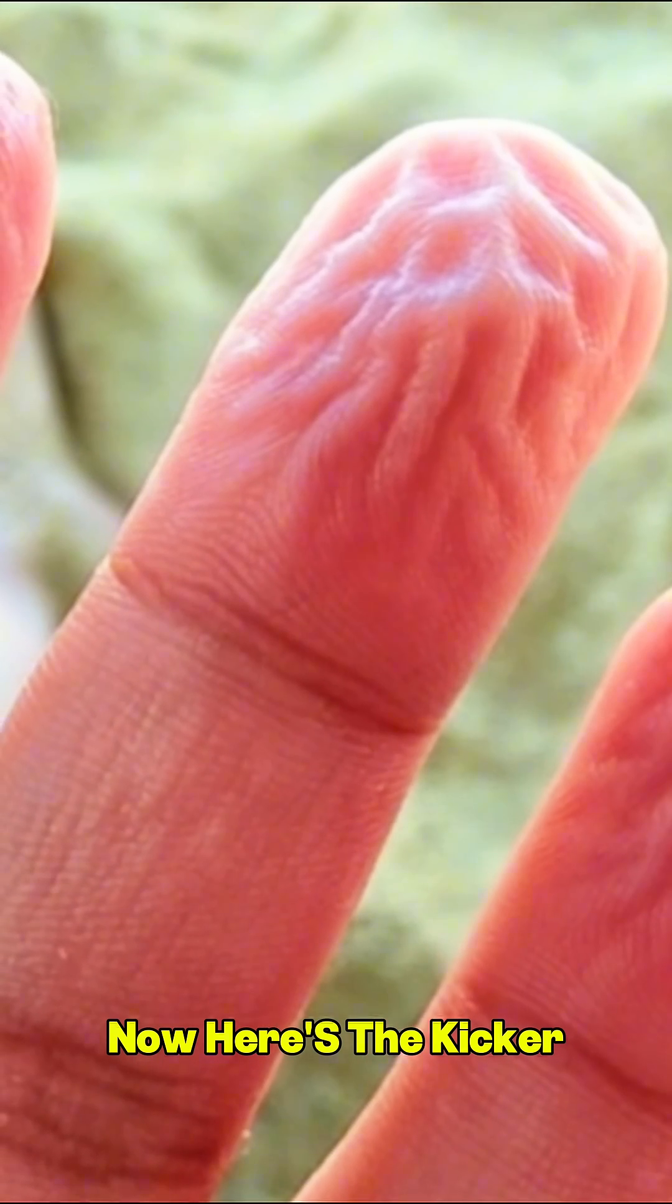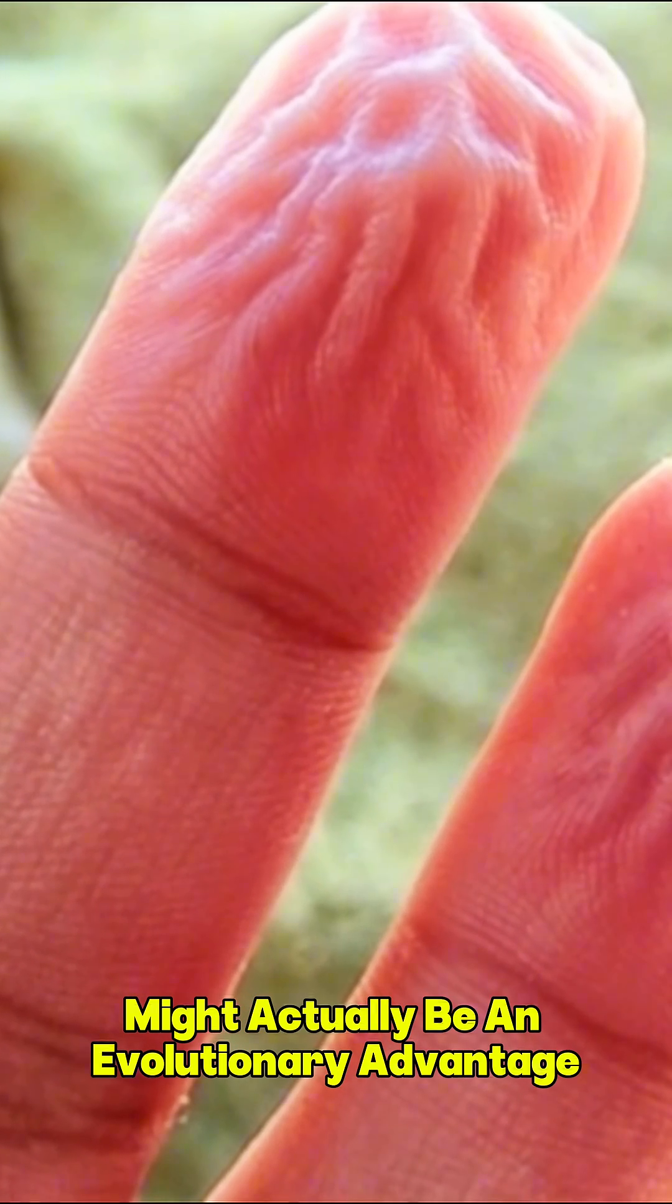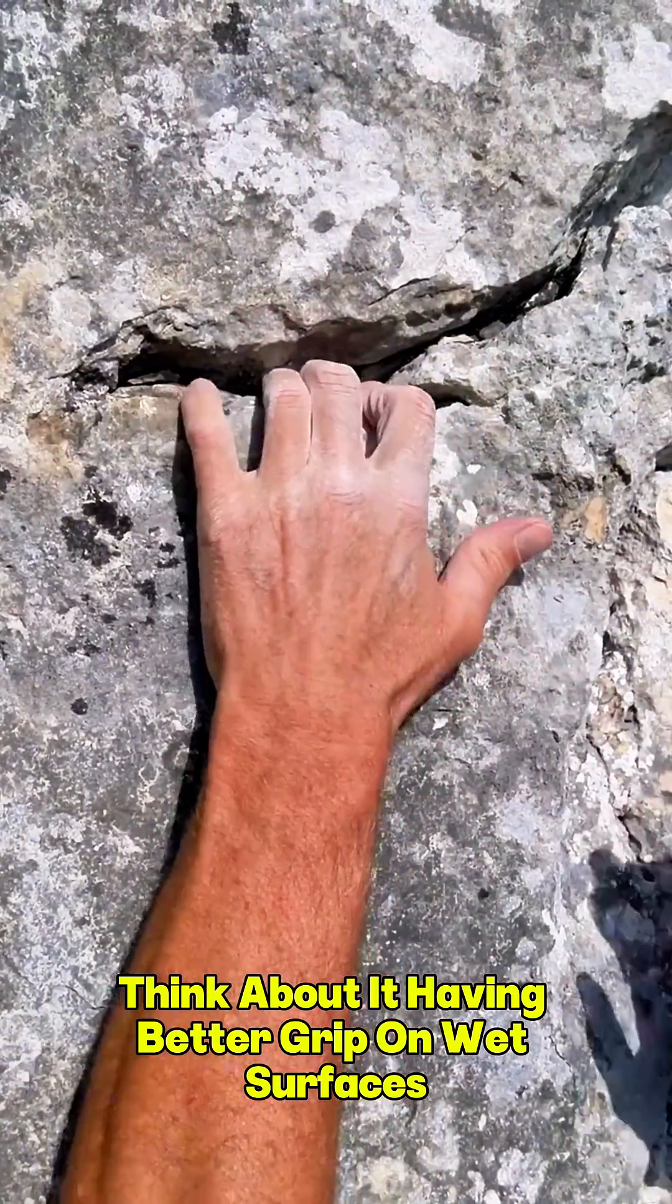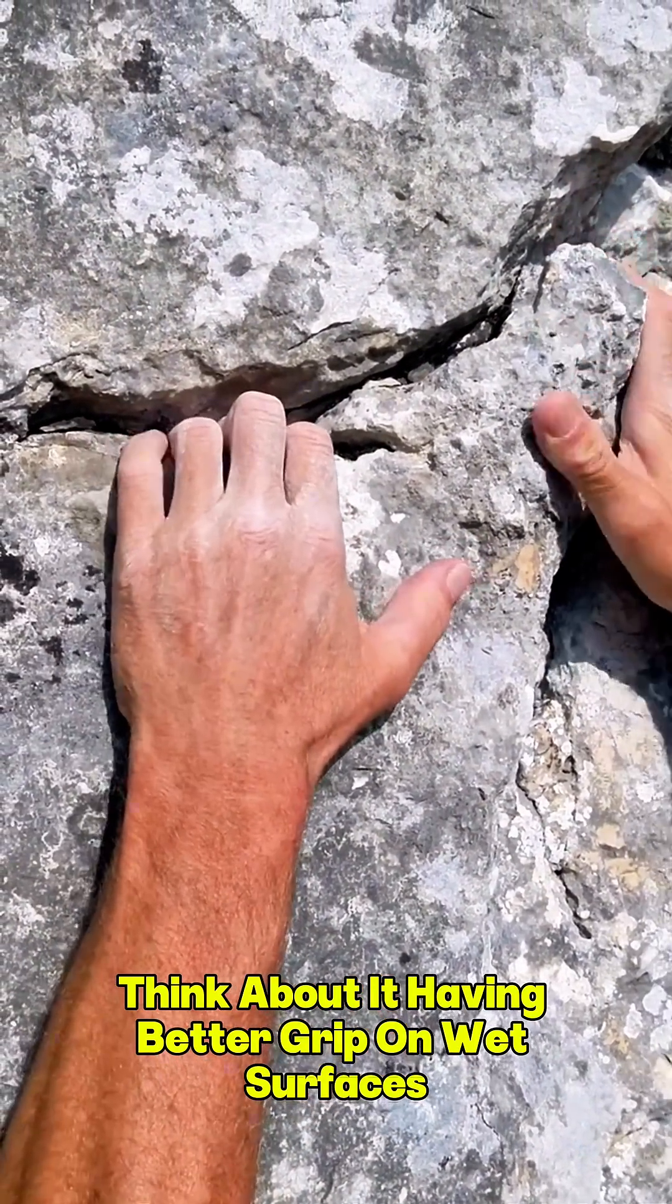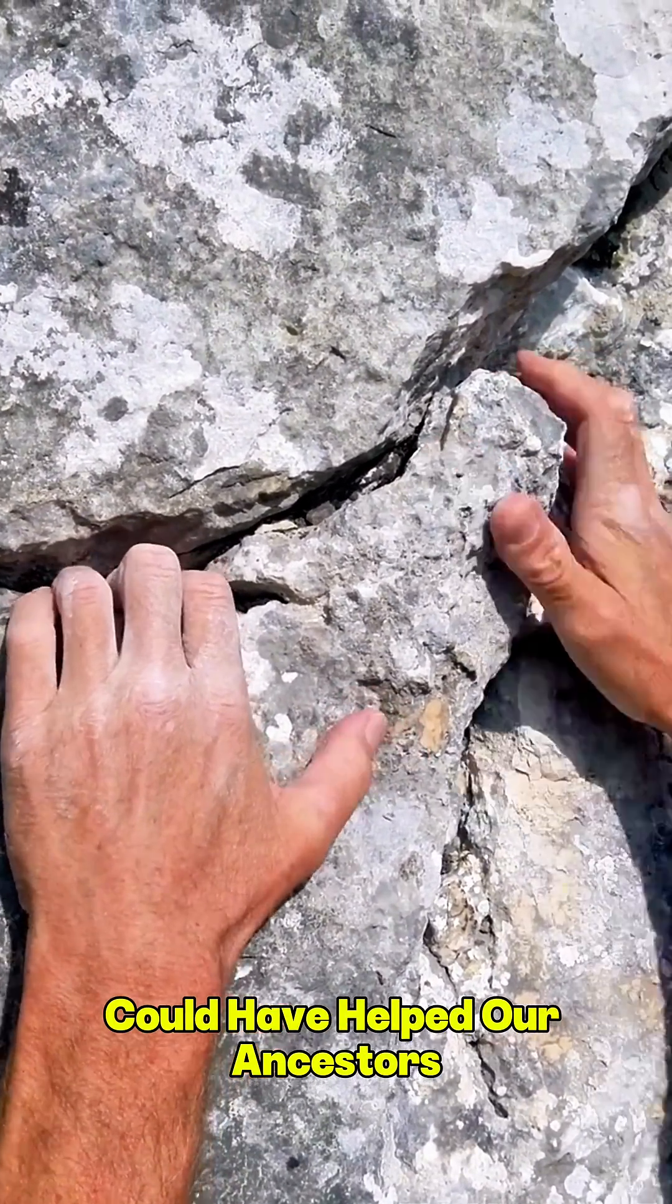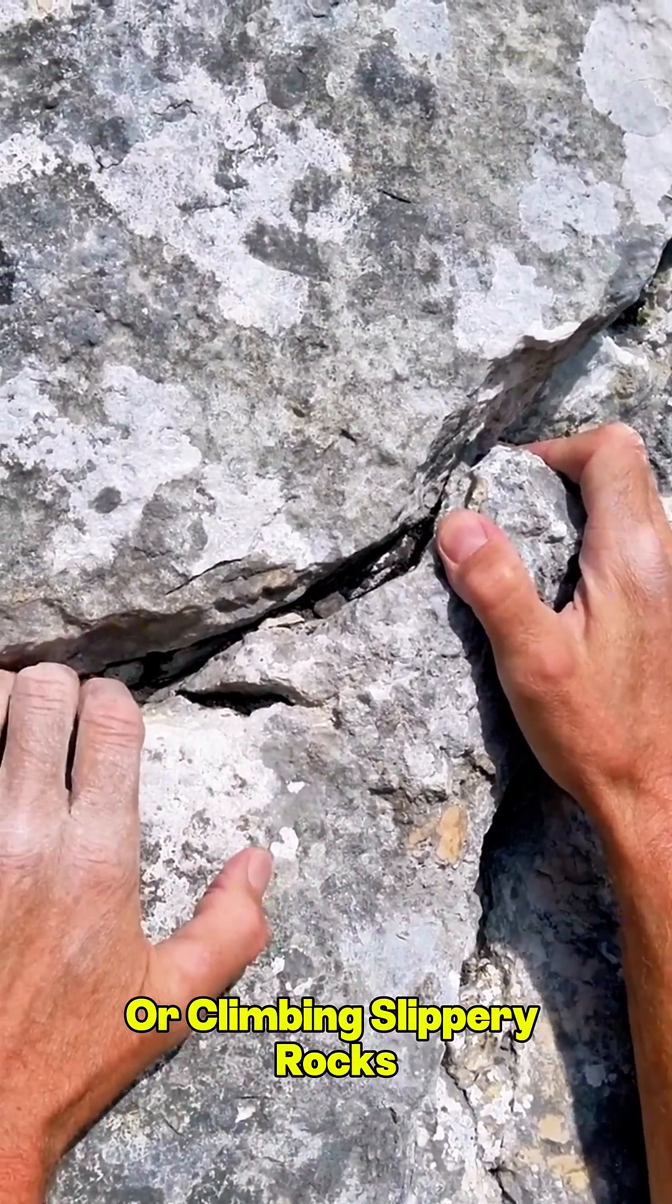Now here's the kicker. This wrinkle effect might actually be an evolutionary advantage. Think about it. Having better grip on wet surfaces could have helped our ancestors while wading through rivers or climbing slippery rocks.